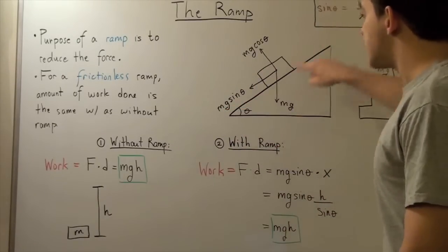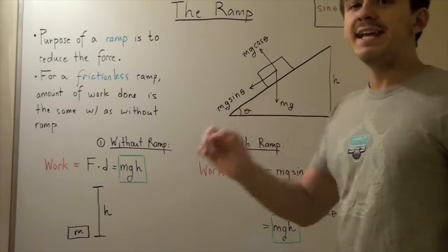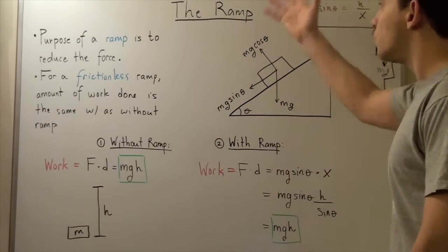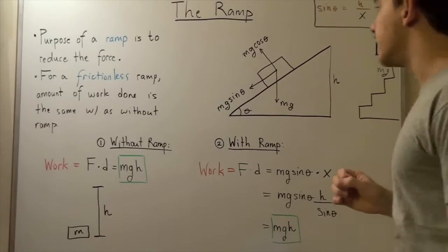Now this surface, this x-axis, makes an angle theta with our ground, the ground on which our ramp is resting on.